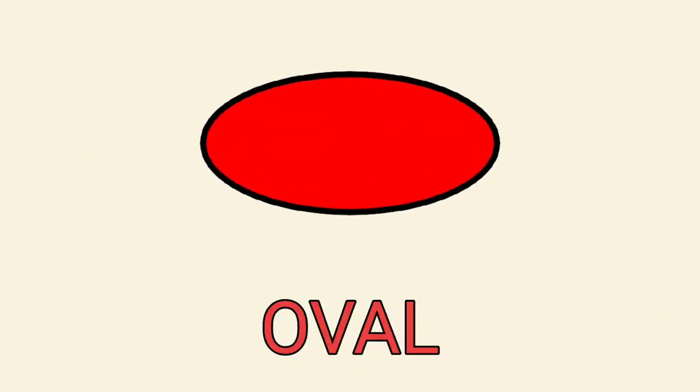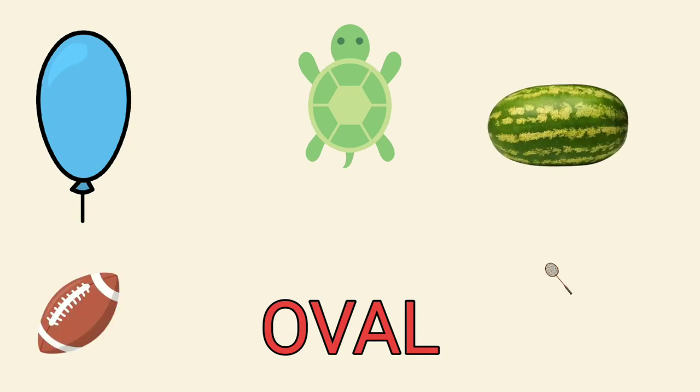Oval. Examples: Balloon, Turtle, Watermelon, American Football, Racket.